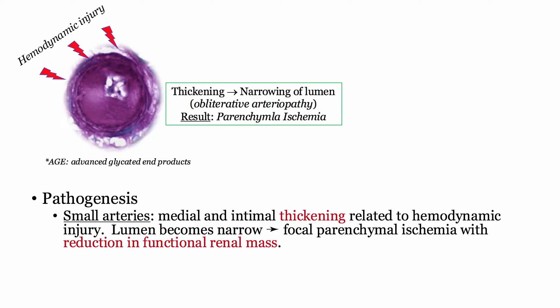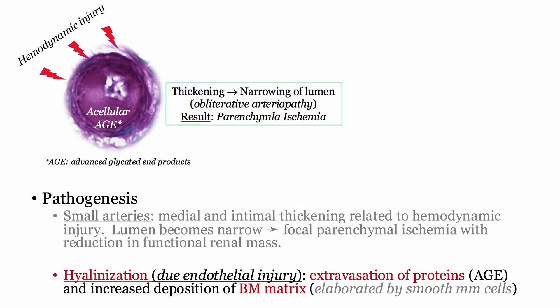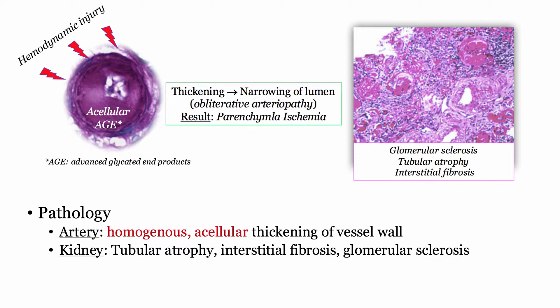Insofar as pathogenesis, there are two parallel processes taking place. First, we see thickening of the intimal and medial layers in response to hemodynamic injury. As with other arteriopathies, the wall thickening results in narrowing of the lumen, which accounts for the development of parenchymal ischemia. Additionally, as a result of endothelial damage, we also see extravasation of proteins and deposition of extracellular matrix. In the diabetic, these extravasated proteins are referred to as advanced glycated end products. These two changes — hyalinization and narrowing of the lumen — translate into the pathologic changes that are characteristic of this disorder.